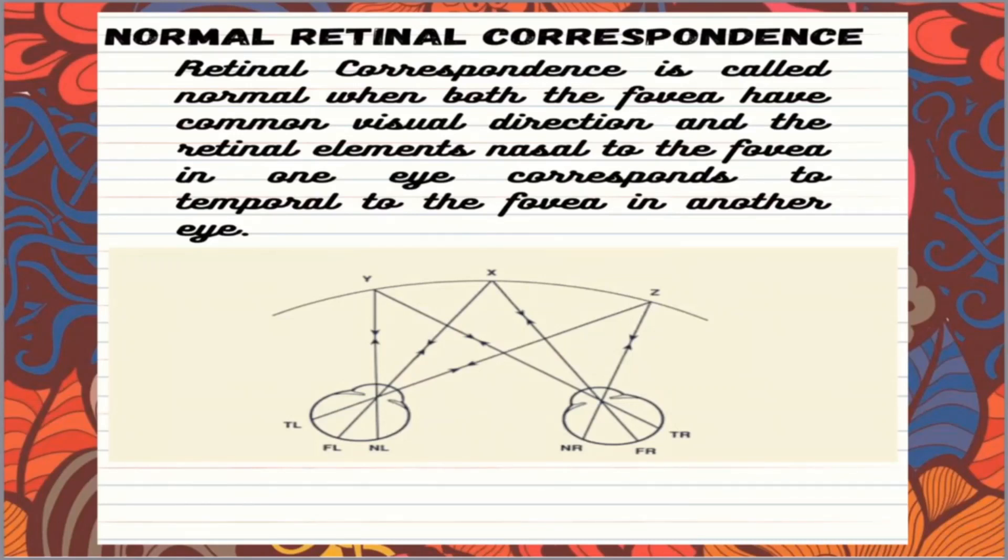Okay, so see this line. Retinal correspondence is called normal when both the fovea have common visual direction and the retinal elements nasal to the fovea in one eye corresponds to the temporal to the fovea in another eye. So what happens? Both the retina have their equivalent points in their respective retina, which gets stimulated when light rays fall onto it. The fovea ka corresponding point will be fovea of another retina.